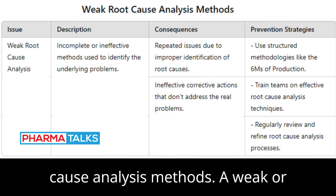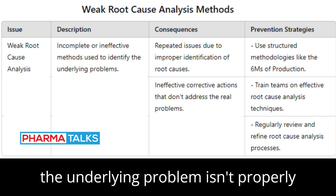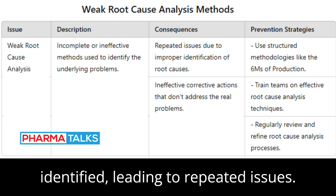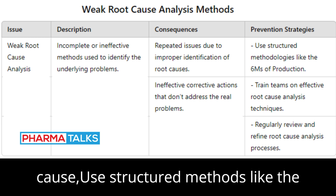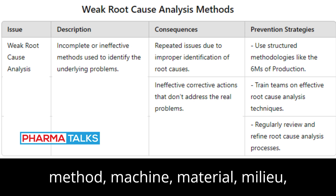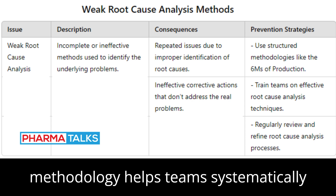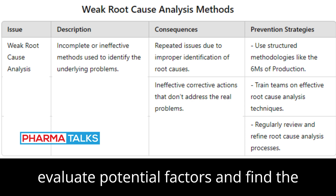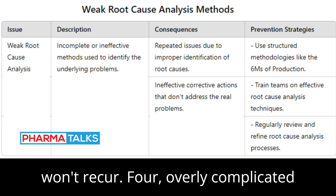Problem 3: Weak Root Cause Analysis Methods. A weak or incomplete root cause analysis means the underlying problem isn't properly identified, leading to repeated issues. To ensure you're addressing the real cause, use structured methods like the 6Ms of production: Manpower, Method, Machine, Material, Milieu (Environment), and Measurement. This methodology helps teams systematically evaluate potential factors and find the real source of the issue, ensuring it won't recur.